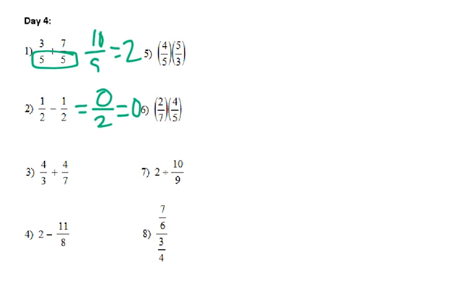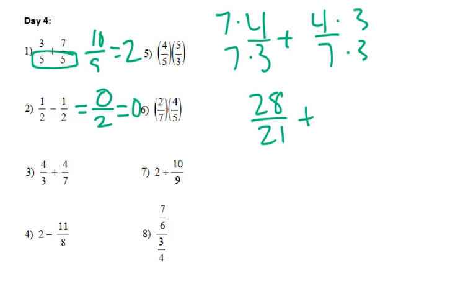Then 4 over 3 plus 4 over 7, times this side by 3, this side by 7, and we get 28 21sts plus 12 21sts. So add those, that would be 40 over 21, which we cannot reduce, so 40 over 21.